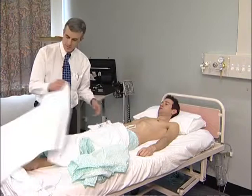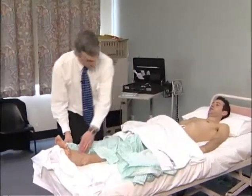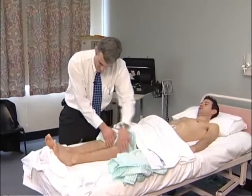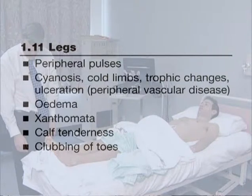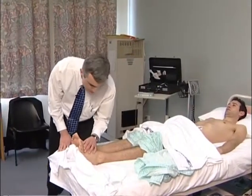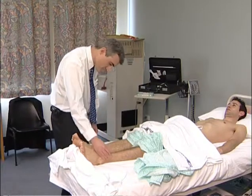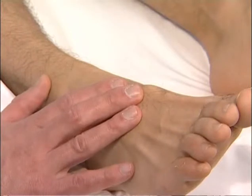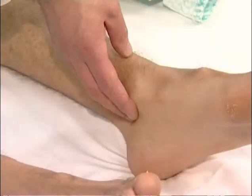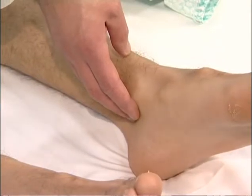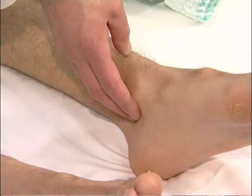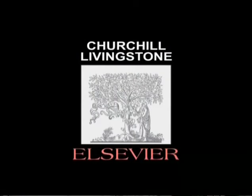The examination concludes with an assessment of the legs. After compressing the skin over the lower tibia to test for pitting oedema, the examiner feels the dorsalis pedis and posterior tibial pulses on each side. Compressing the calves for tenderness may be worthwhile if there is any clinical suspicion of deep venous thrombosis. The optic fundi should be examined if infective endocarditis is suspected.